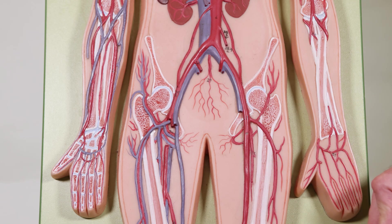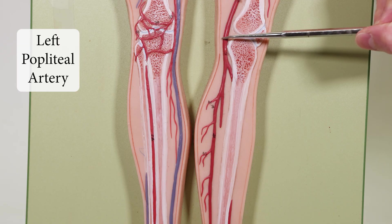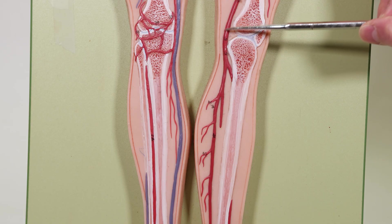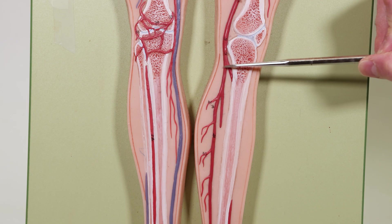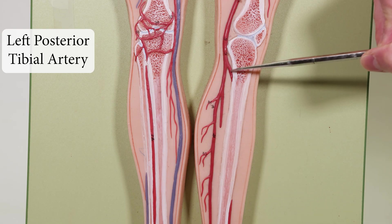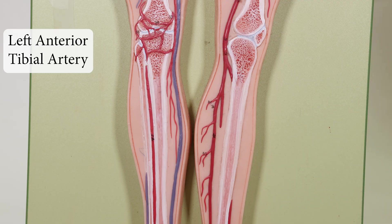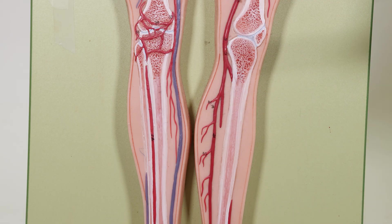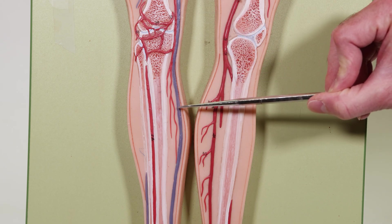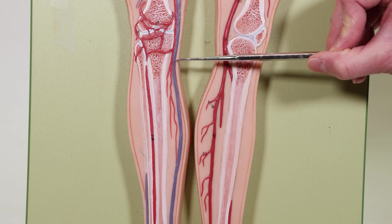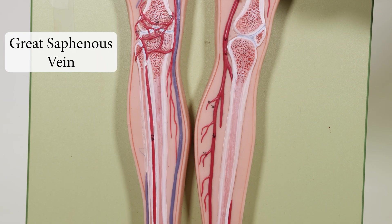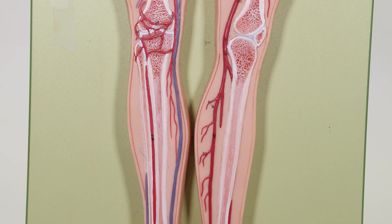Continuing down, the left femoral artery goes to the left popliteal artery. After readjusting the view, the popliteal artery is easier to see. From the popliteal artery, staying posterior gives the posterior tibial artery, while the one going forward is the anterior tibial artery. This long vessel that runs all the way down is the great saphenous vein — so those are some blood vessels of the flat man.